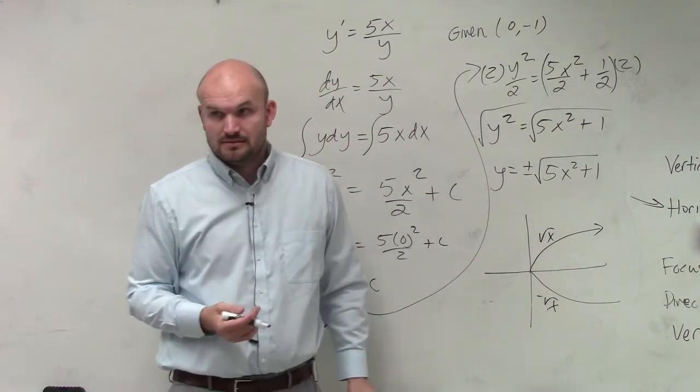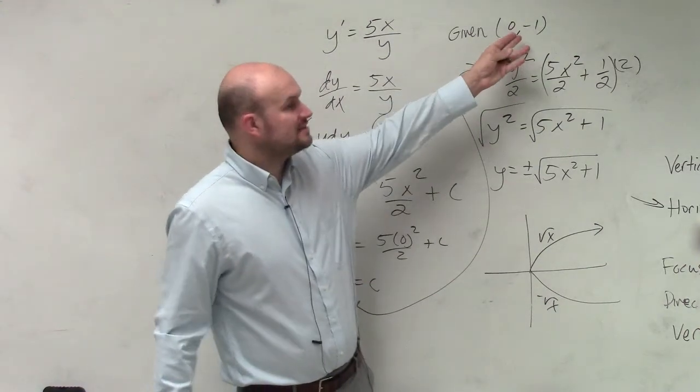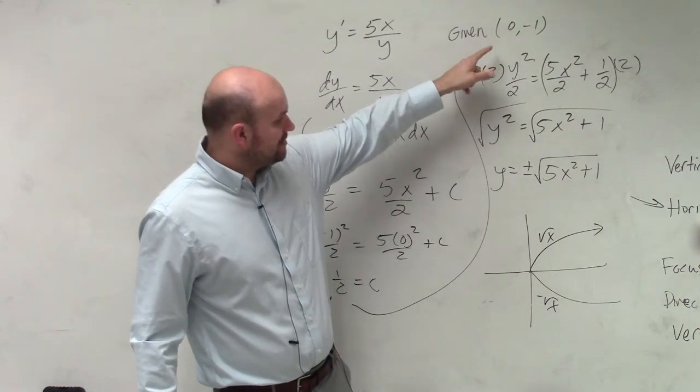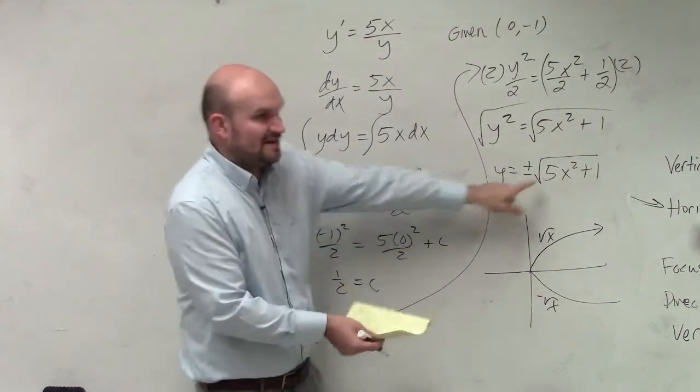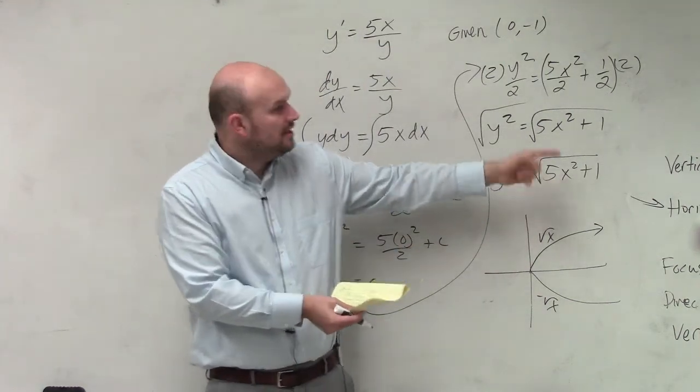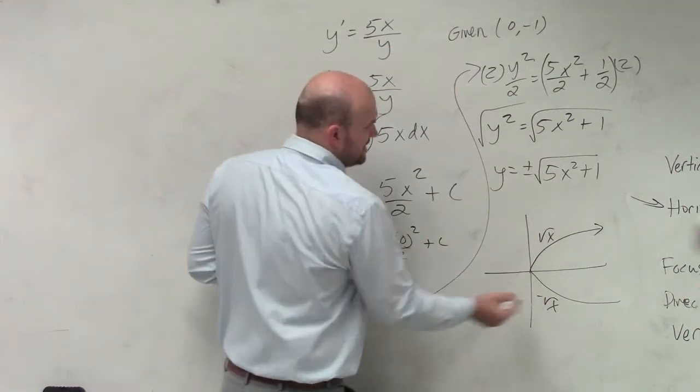And where is the point that it has to go through? 0, 0 comma negative 1. So whatever this graph is, obviously this graph has transformations. But whatever that graph is, you can see that's going to be the negative solution.